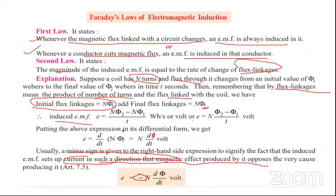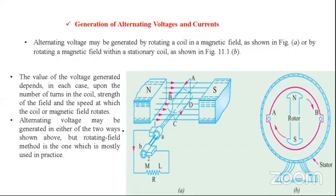Generation of alternating voltage and current: Alternating voltage may be generated by rotating a coil in a magnetic field. You have a north pole magnet and a south pole, with a gap between the north pole and south pole where we have the magnetic field.